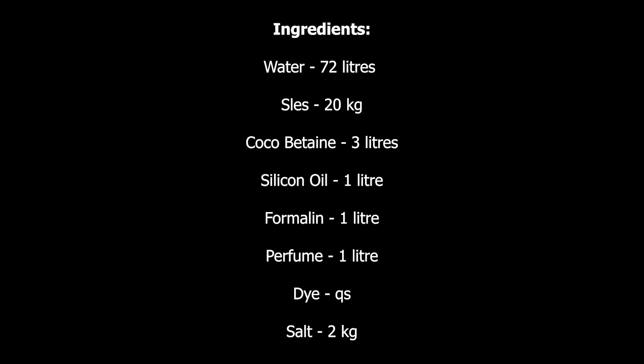Perfume should be 1% of the total volume — out of 100 liters you need 1 liter of perfume. For the dye, we say QS, which means quantity sufficient — you decide on the amount of dye to put in your mixture. The next ingredient is salt, which should be 2% of the total volume. You can consider about 1% to 1.5% to 2% — in this mixture we consider 2% of the total volume, which means out of 100 liters we need 2 kg of salt.